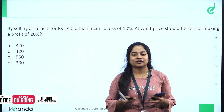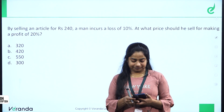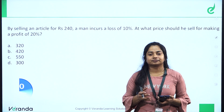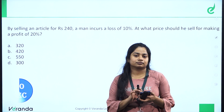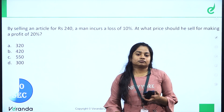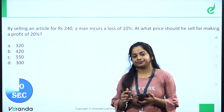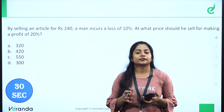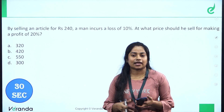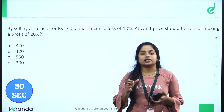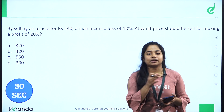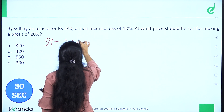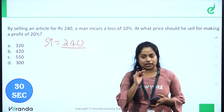Let's go to the next question. Okay, timer starting. By selling an article at rupees 40, a man incurs a loss of 10%. At what price should he sell to make a profit of 20%?